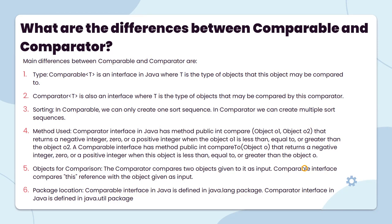Here is the Comparator and Comparable. We discussed Comparable — the interface in Java where T is the type of object that is to be compared. Comparator T is also an interface, where T is the type of object that may be compared by this comparator.